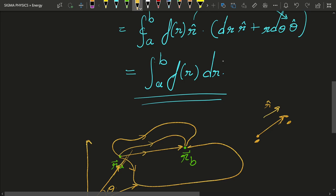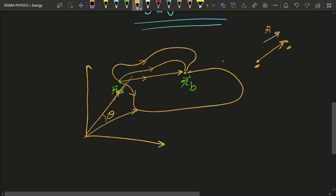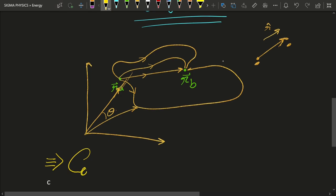And if the work done by a central force is independent of the path taken by a particle, then what do we call such kind of forces? Yes. You know from my previous video that such forces are known as conservative forces.